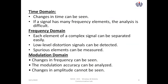In the time domain, the signal changes with respect to time — from t0, t1, t2, t3, and so on. If a signal has many frequency elements, analysis is very difficult — that is one downside of time domain. In the frequency domain, each element of a complex signal can be separated easily because signals are bound to frequency, not time. We can design filters to obtain or reject specific frequencies, detect low-level distortion, and measure spurious elements.